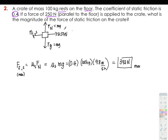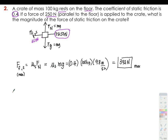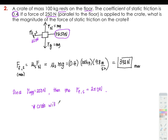The question asks for the magnitude of the force of static friction on the crate. The maximum is 392 newtons, but based on our free body diagram and the given, the force of push is 250 newtons. If it's pushing 250 newtons and the crate is not moving, then the static friction is also equivalent to 250 newtons. It means your crate will not slide — until 392 newtons of push, your crate will not slide.